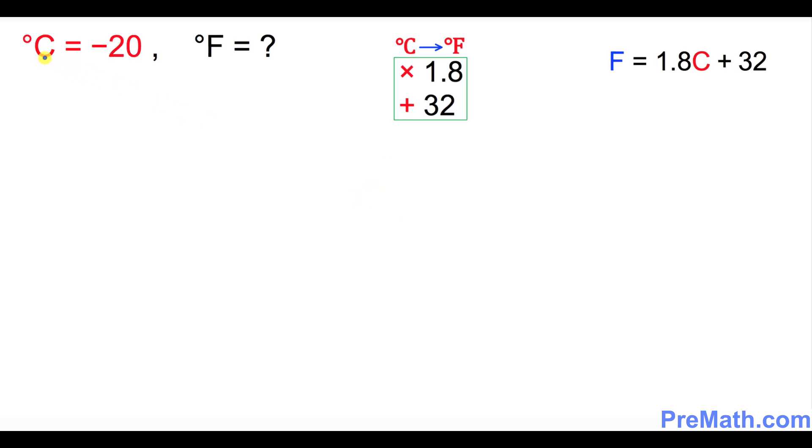So in this next problem, our C equals negative 20 and we want to find F value. We will be once again using this formula over here. The very first step is whatever your C value, which is negative 20, multiply by